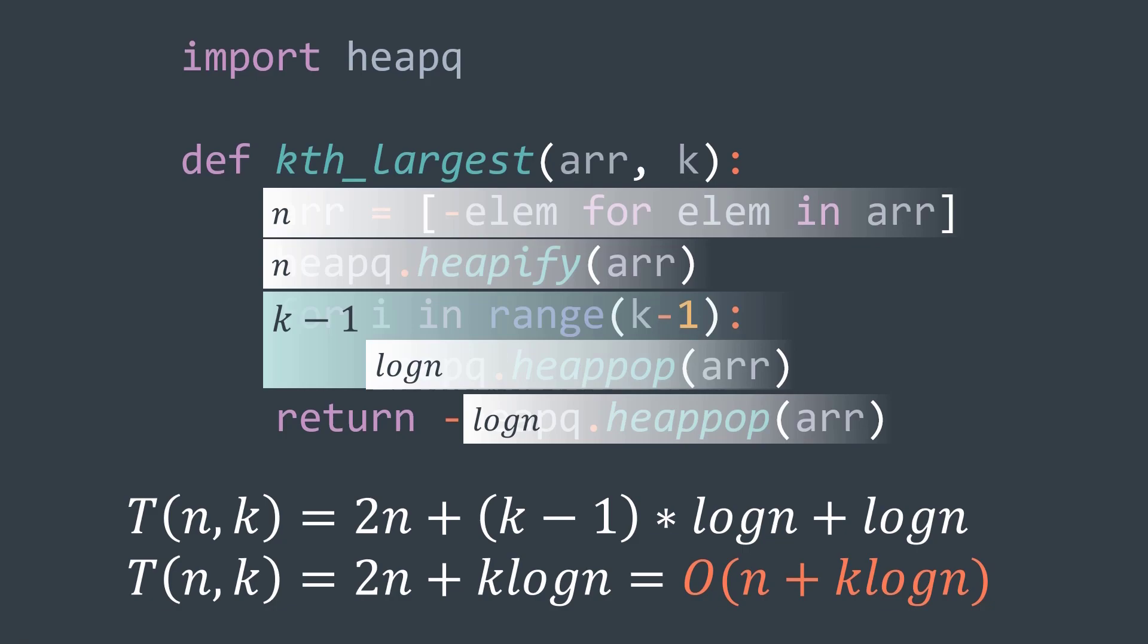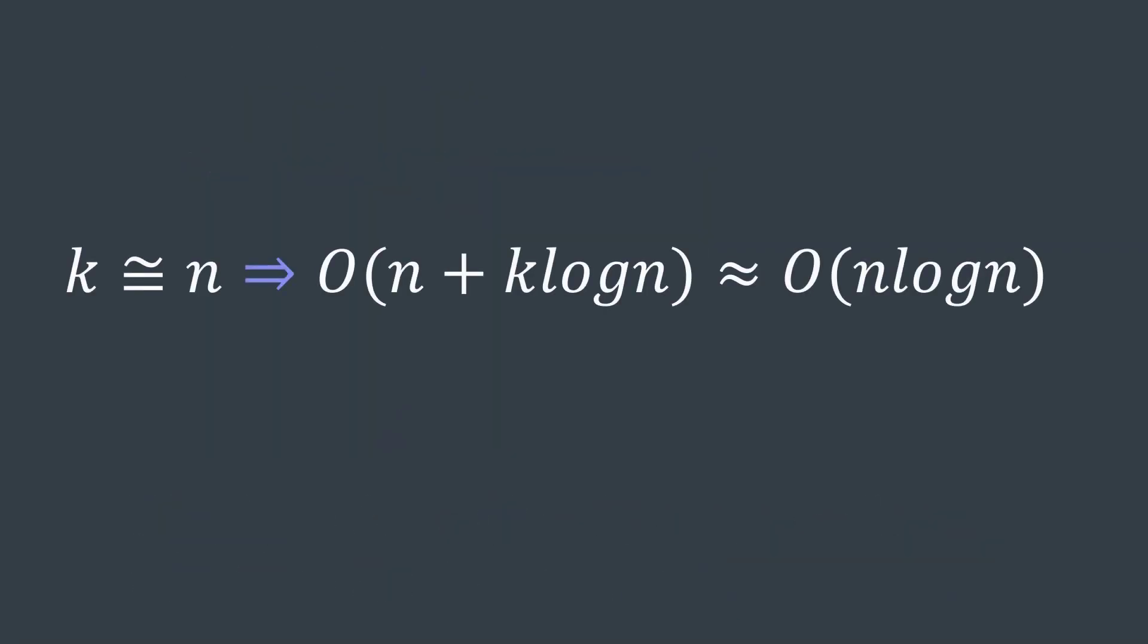But this solution starts giving interesting time performance difference only when n is huge and k is small, because when k is close to n, O of n plus k log n is close to O of n log n.